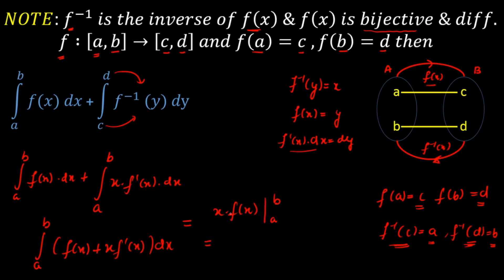Evaluating [x · f(x)] from a to b: putting in the upper limit gives b · f(b), and the lower limit gives a · f(a). Since I want the result in terms of c and d, I replace f(b) = d and f(a) = c. So the final answer is b·d minus a·c.